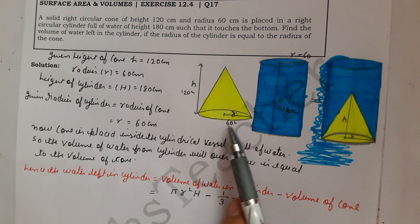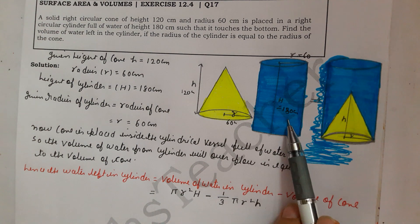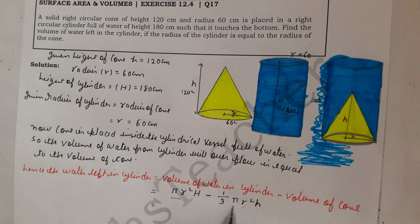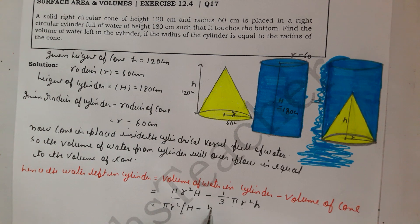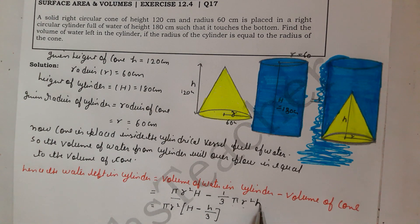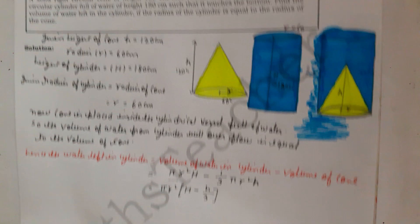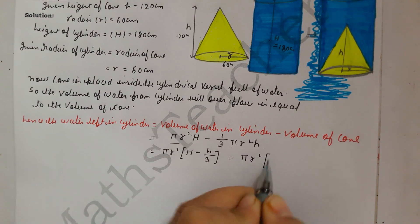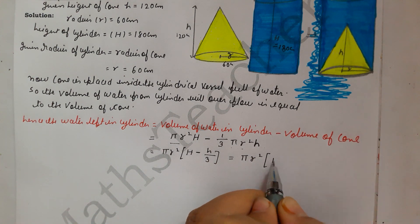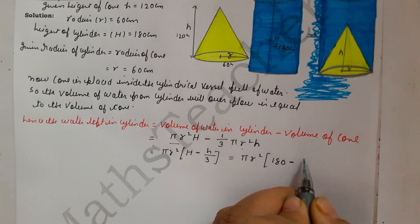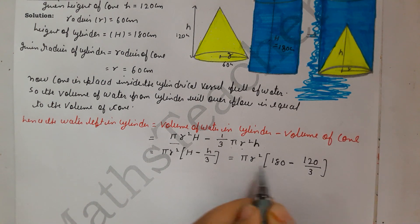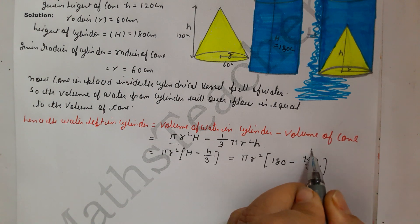Write it here: small r and small h for cone, capital H for cylinder. Here you see common factor πr². We have taken πr² common: πr²(H - h/3). Now let's put values here. πr² times capital H value is 180 minus small h value 120 by 3. Let's put value here, cancel to get 40.